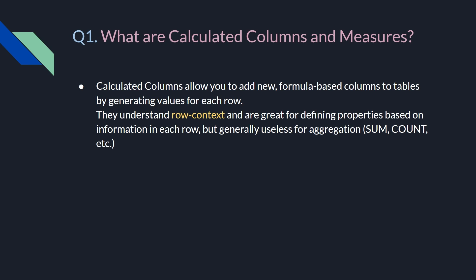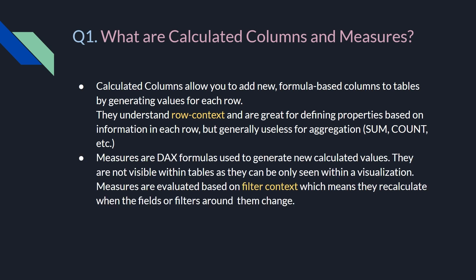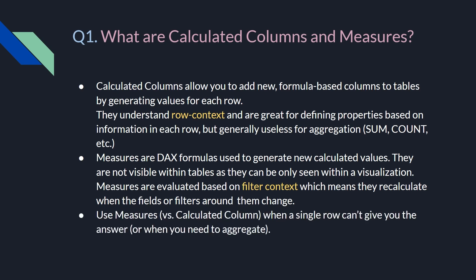Calculated columns are quite useless when it comes to aggregation like SUM, COUNT, etc. Whereas measures are DAX formulas used to generate new calculated values, and they are not visible within tables — they can only be seen within a visualization. Measures are evaluated based on filter context, meaning they recalculate when the fields or filters around them change. We should use measures when a single row can't give you the answer, or when you need to aggregate a number of values.